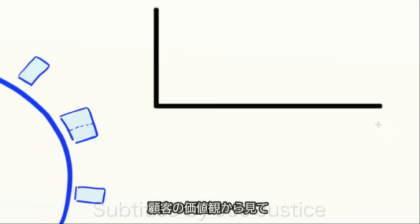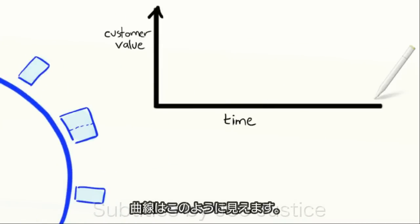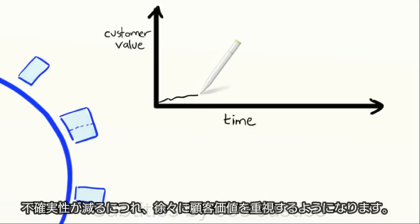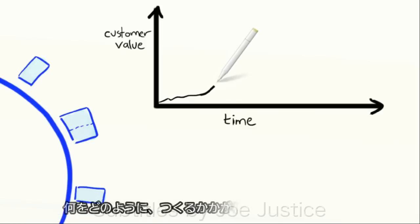From a customer value perspective, the curve looks like this in the beginning. As uncertainty is reduced, we gradually focus more and more on customer value. We know what we're going to build and how, so just do it.